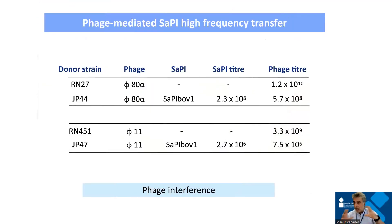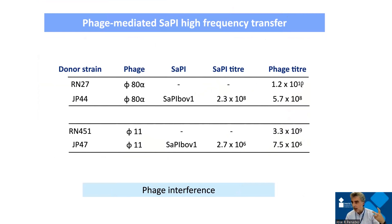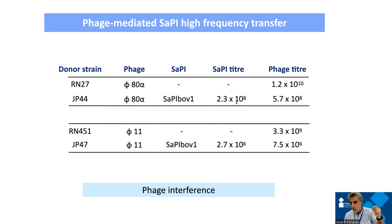As soon as the cell lyses, you have phage particles and also SaPI particles. In classical transduction experiments, when you have just a phage the number of phage particles is very high. But when an island is present, because the island uses the phage machinery, the phage titer is reduced. We have manipulated these islands to include an antibiotic marker to quantify mobility, and we can get more than 100 million SaPI particles per milliliter of culture. These elements move at an exceptionally high frequency — never seen for any other mobile genetic element.